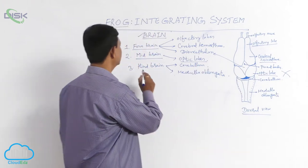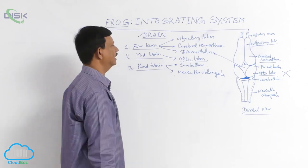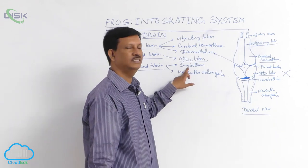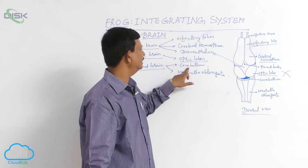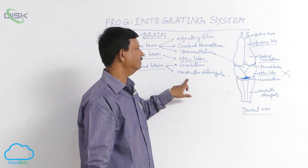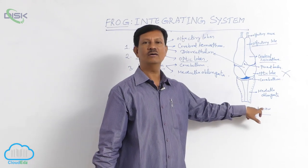The last part of the brain is the hindbrain. It is divided into two parts: cerebellum and medulla oblongata.